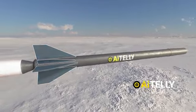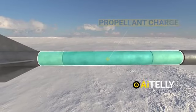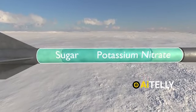Moving on to the central section, we encounter the propellant charge. This component is essentially a mixture of sugar and potassium nitrate, serving as the rocket's fuel source.